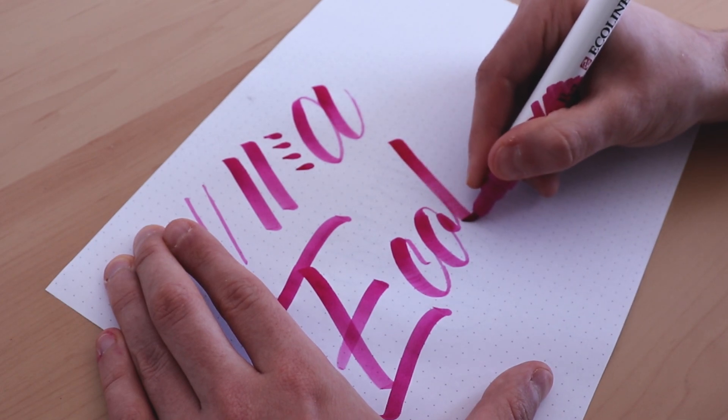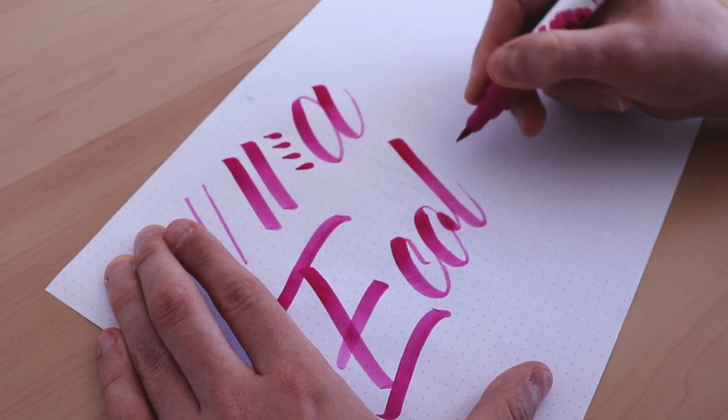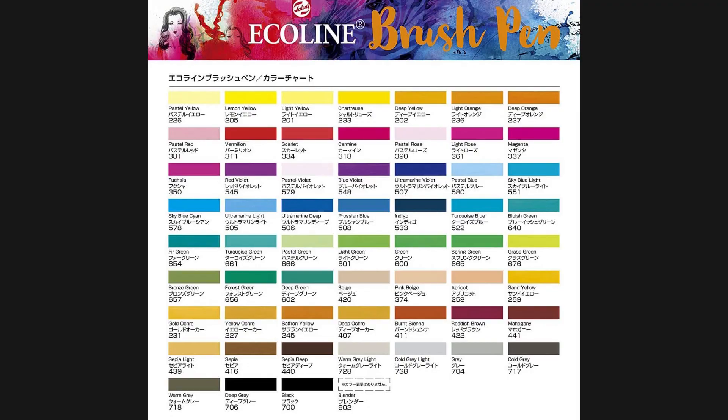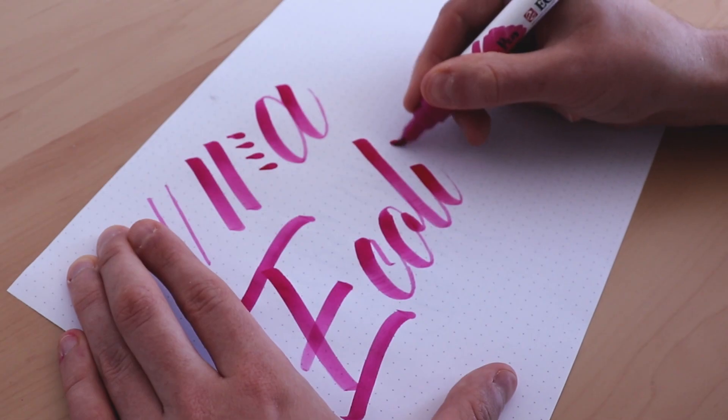It creates an intriguing ombre effect but also increases the chances of making smudges. As for the color choice the Ecoline offers a selection of 60 different vibrant watercolor based ink.